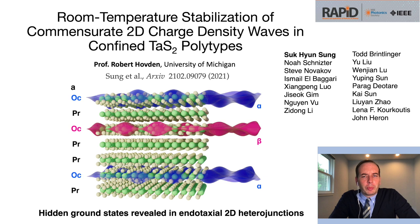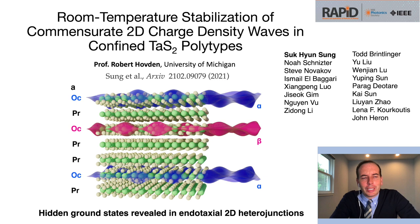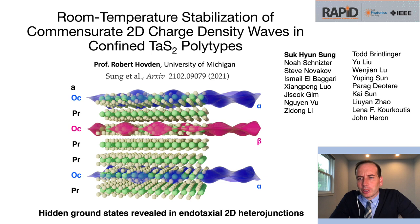Hello, everyone. My name is Robert Hovden, and I'm a professor at the University of Michigan. The title of this talk is Room Temperature Stabilization of Commensurate 2D Charge Density Waves in Confined Tantalum Disulfide Polytypes. I'd like to thank the organizers of this IEEE meeting. A lot of effort has gone into validating the system I'm going to share, through notable contributions from many collaborators. The work is also presented in Sukhyeon et al., an archived paper just this year.